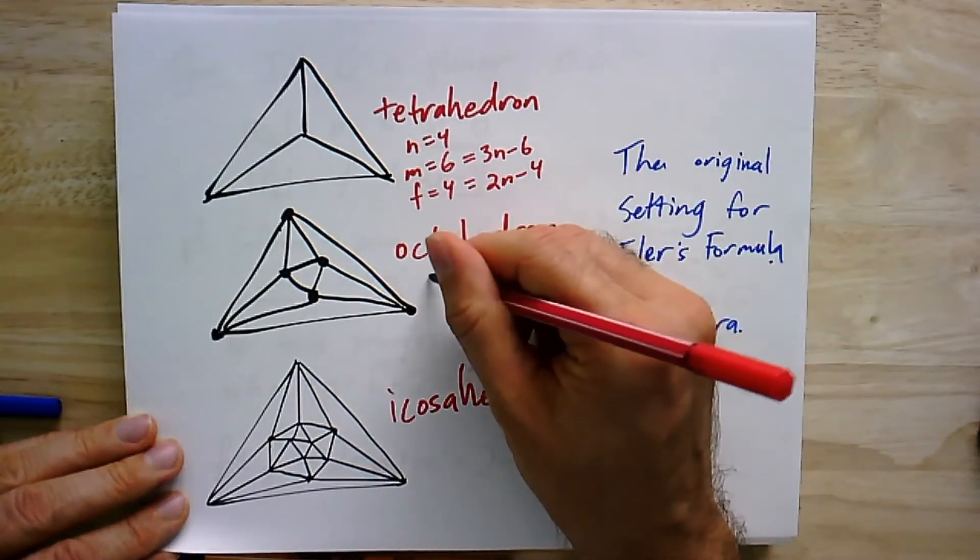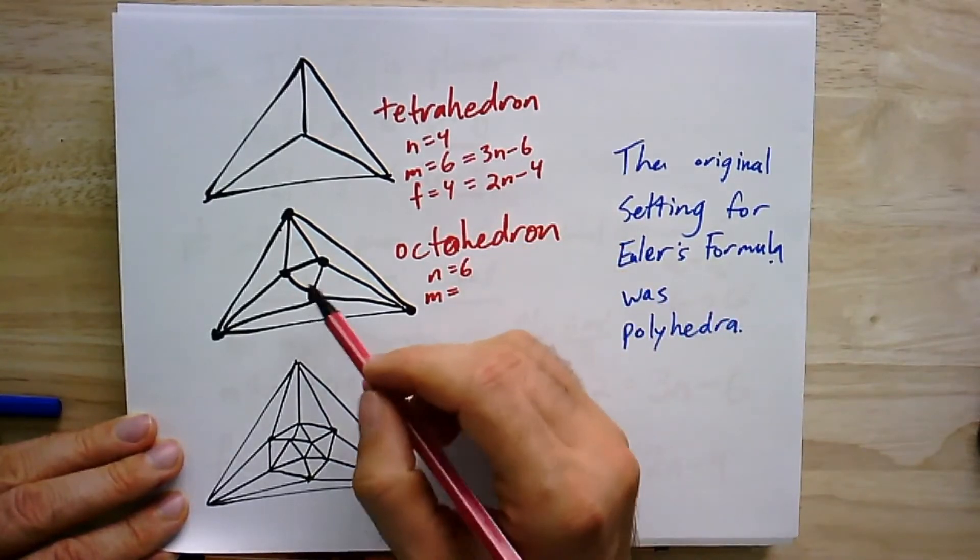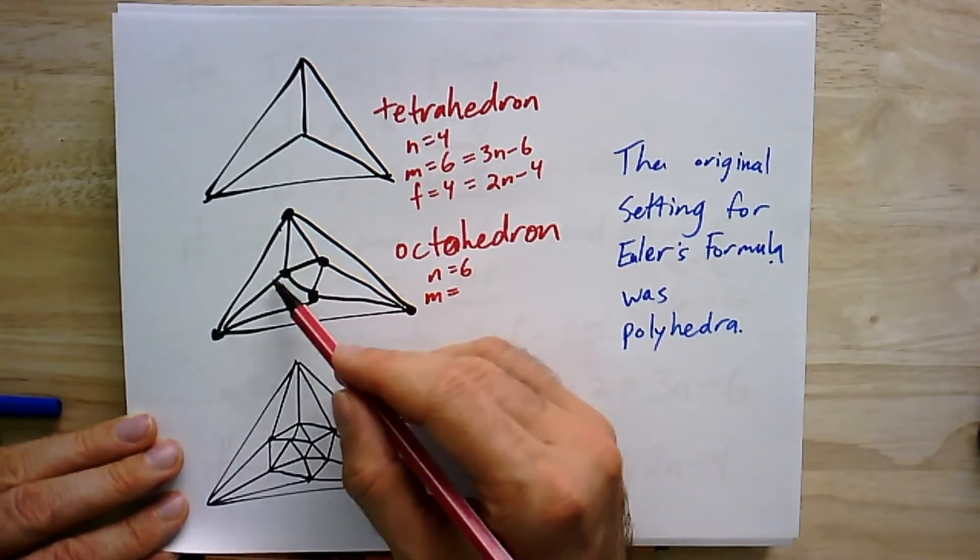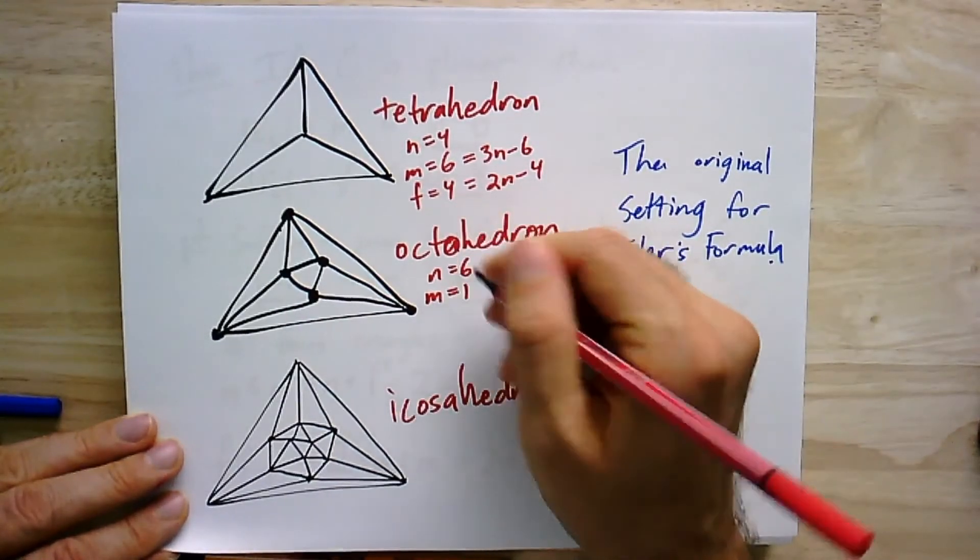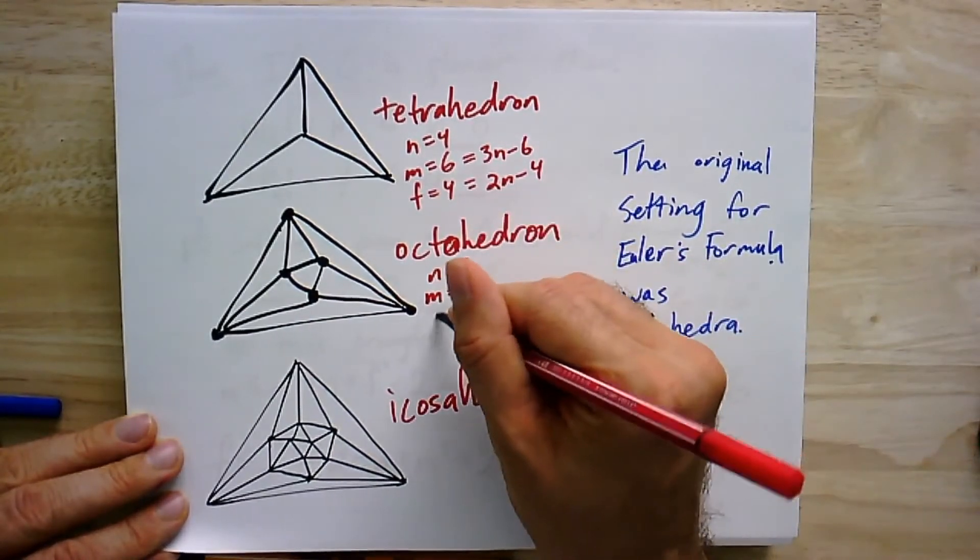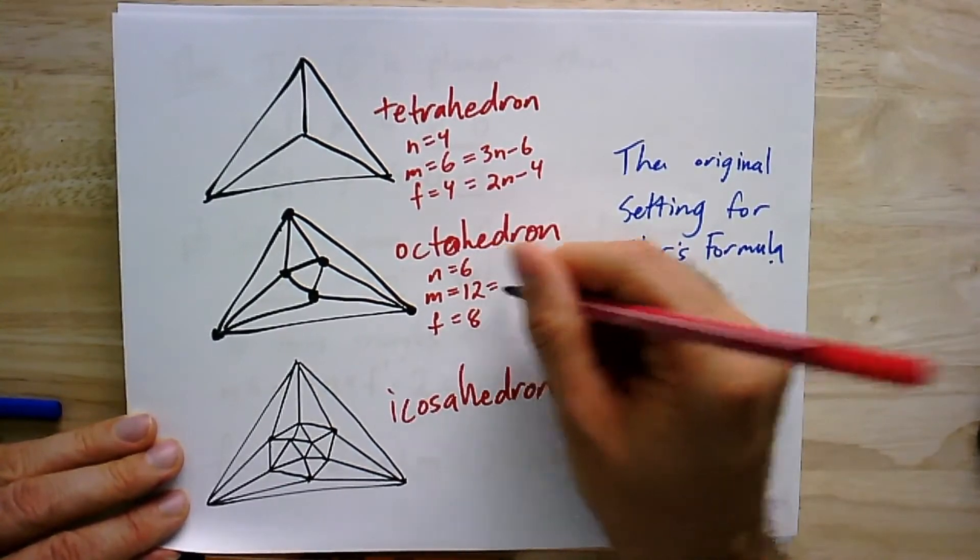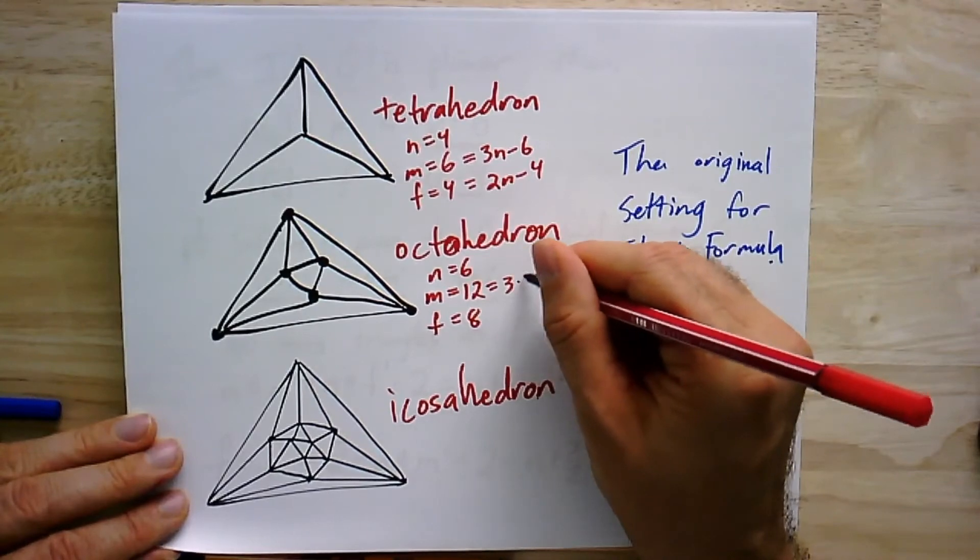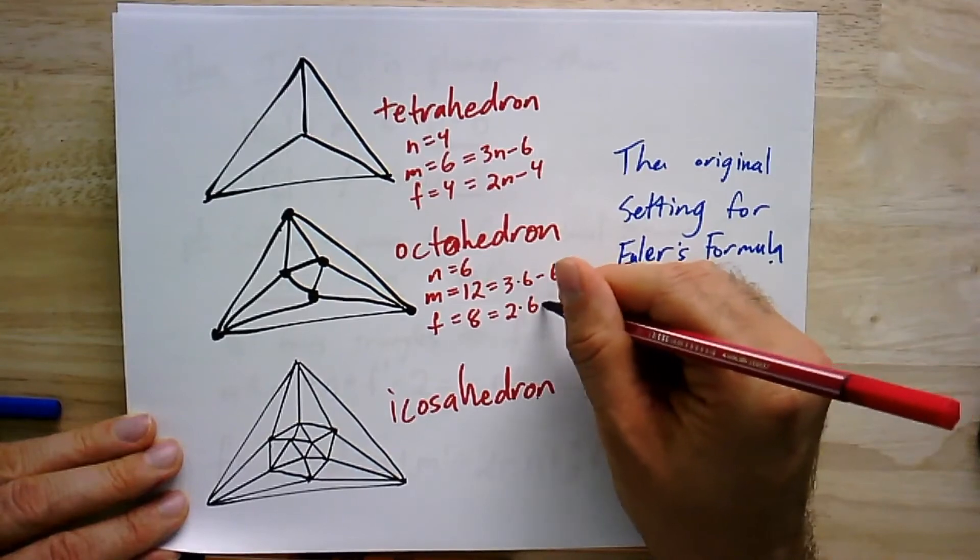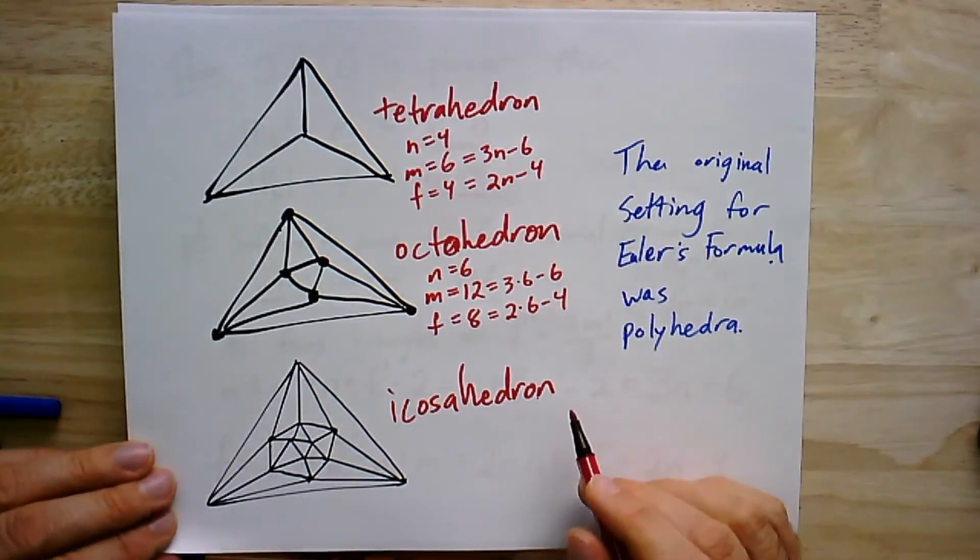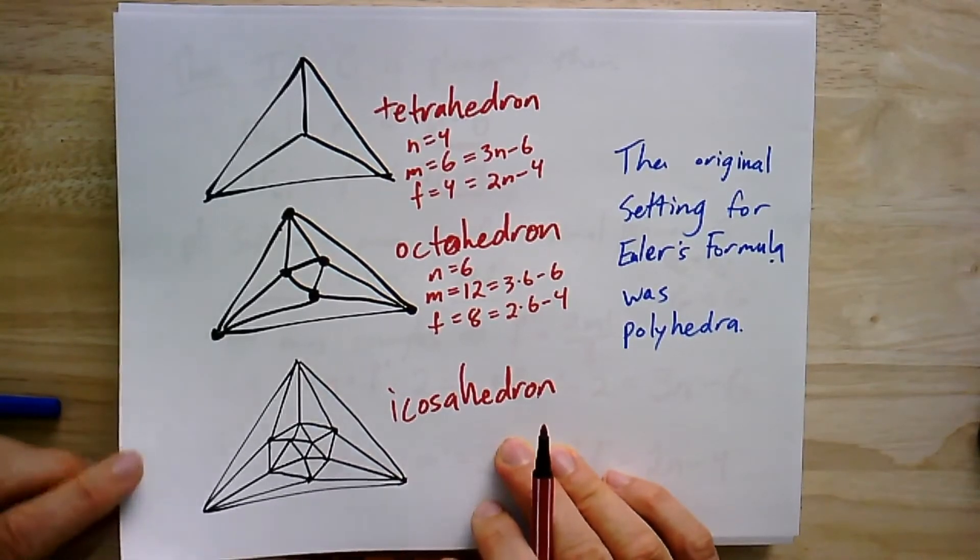The octahedron has n equals 6, m equals, oh, I got to count, 1, 2, 3, 4, 5, 6, 7, 8, 9, 10, 11, 12. And f equals 8. That's the 8 for oct. And we can check again that this is 3 times 6 minus 6. And this is 2 times 6 minus 4. And you can do it yourself for the icosahedron. I'll leave that as an exercise.